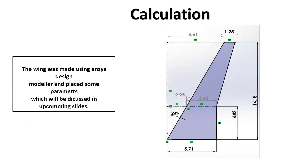We obtained the dimensions from the internet. This is the diagram of the Boeing 737 wing showing Chord A, Chord B, and Chord D. The length of Chord A is 5.71 meters, the distance between Chord A and Chord B is 4.83 meters, the distance between Chord A and Chord D is 14.18 meters, and the length of Chord D is 1.25 meters. We then needed to find the remaining unknown distances.